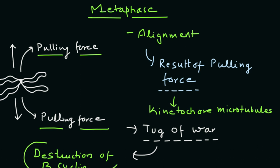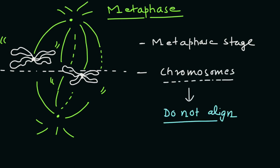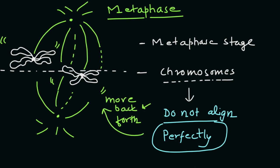During the metaphase stage, the chromosomes in certain types of cells do not align perfectly at the metaphase plate. Instead, they move back and forth between the poles randomly, only roughly aligning along the middle line.